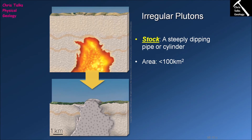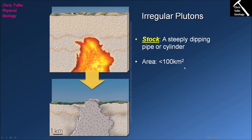The first type of intrusion geologists recognize is the irregular pluton, named for its highly irregular margin. In three dimensions, most of these plutons have an approximately cylindrical form. When an irregular pluton has this cylindrical form, we commonly refer to it as a stock, and stocks are typically quite steeply dipping — near vertical. In terms of surface expression, irregular plutons and stocks typically expose less than 100 square kilometres of igneous rock.